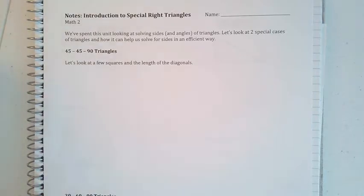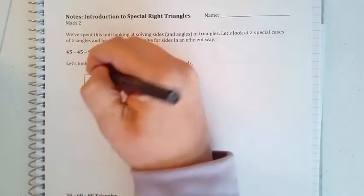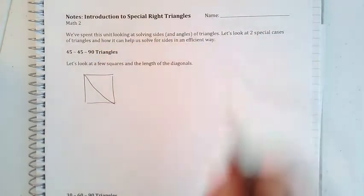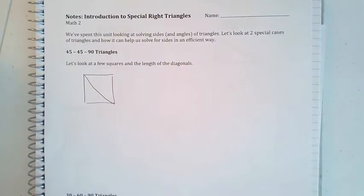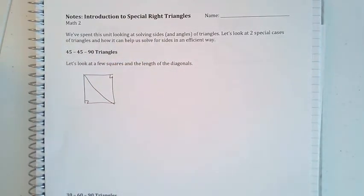We're going to start with a square and look at its diagonal. Very poorly drawn, sorry. Some things we know about a square is that there's 90-degree angles all the way around.